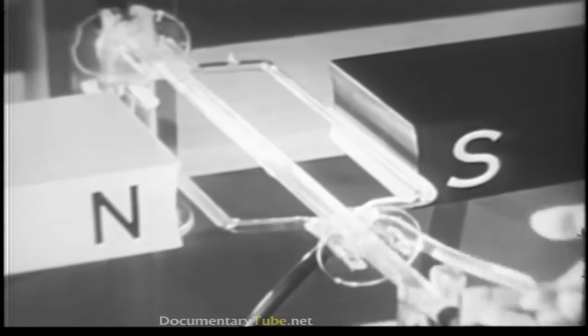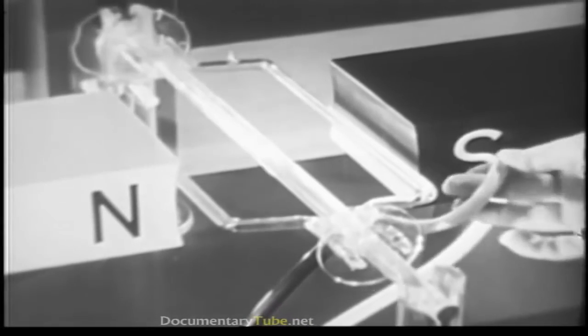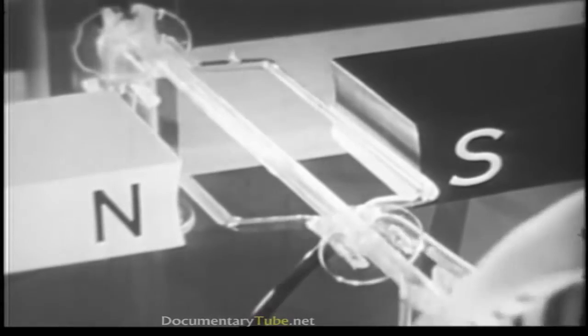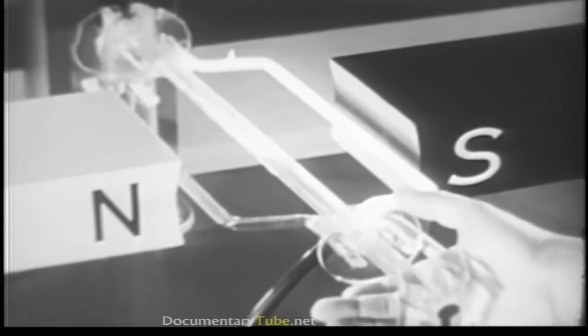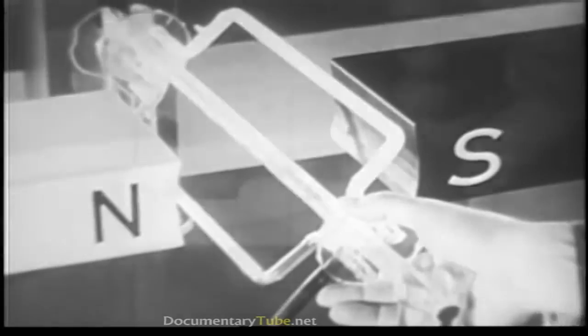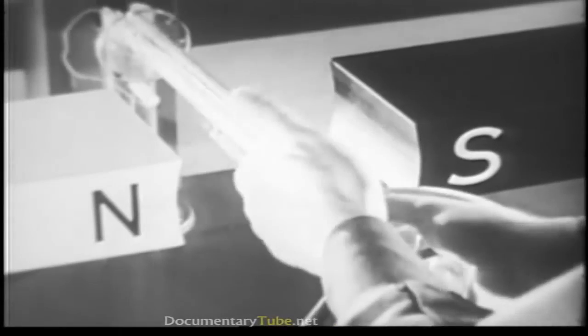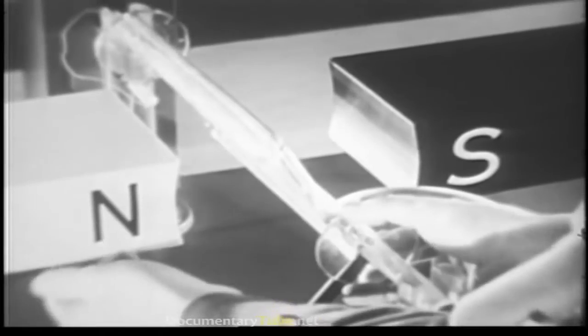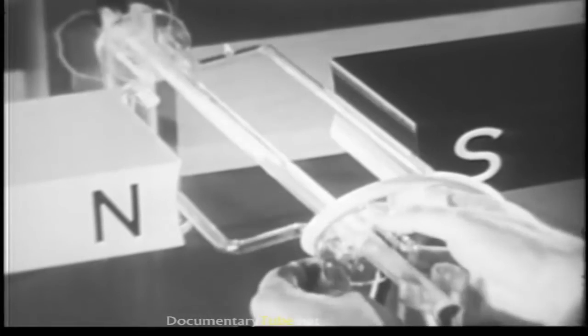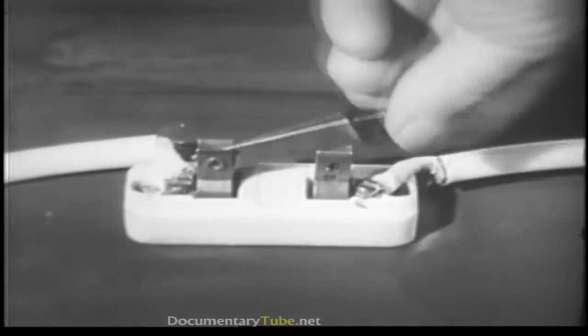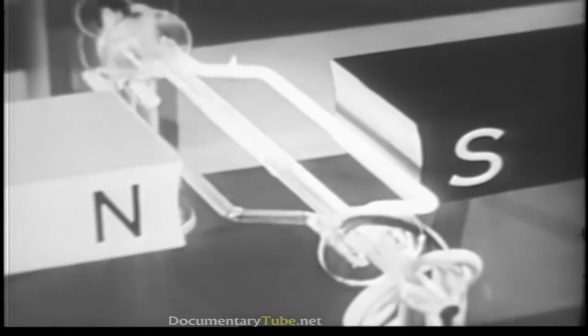This is going to be the north pole of the loop as soon as current begins to flow. When we place the north pole of the wire loop near the north pole of the bar magnet and turn on the current, the loop starts to rotate because its north pole is repelled by the north pole of the bar magnet.